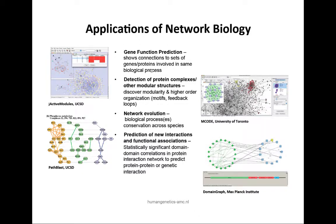Network analysis is useful for all sorts of things. A number of algorithms from computer science have been brought over, plus many new algorithms have been developed in computational biology. These can predict the function of a gene, find modular structures like protein complexes or pathways, study network evolution using network alignment algorithms analogous to BLAST for protein sequences, and predict new protein interactions by finding regions of the network where almost everything is connected.